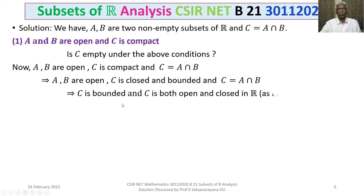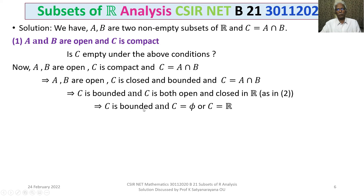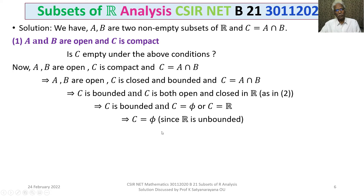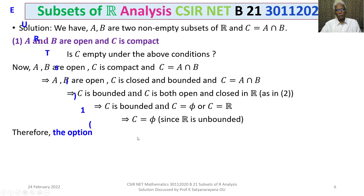So C is both open and closed in R, and C is bounded. C being both open and closed means C equals either the empty set or R. Since C is bounded and R is unbounded, the only possibility is C equals the empty set. So C turns out to be empty under these conditions. Therefore, Option 1 is true.